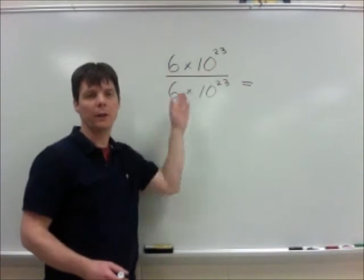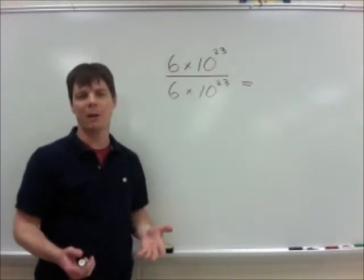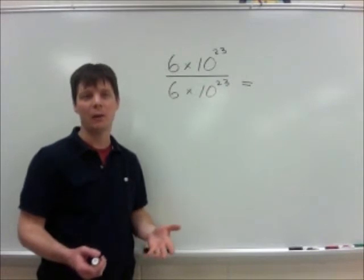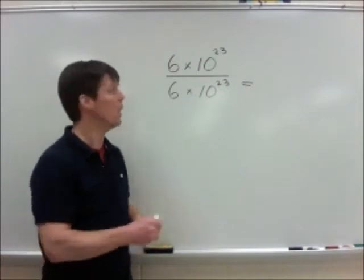We're going to take the number 6 times 10 to the 23rd and divide that by 6 times 10 to the 23rd. We should be able to come up with an answer for this even without using our calculator, right? Because any time that we divide a number by itself, the answer that we get should be 1.